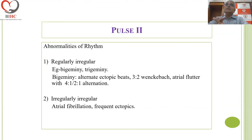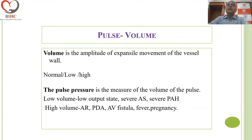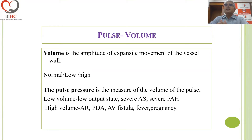The rhythm may be irregular because there is a premature ventricular or atrial contraction resulting in bigeminy or trigeminy, or a totally irregular pulse. Too frequent ectopics or atrial fibrillation is the cause for a totally irregular pulse. The volume of the pulse is the amplitude or expansive movement of the vessel wall — it can be normal, low, or high. The objective measure of pulse volume is the pulse pressure. A low volume pulse is a feature of a low output state as in severe aortic stenosis or severe pulmonary arterial hypertension. A high volume pulse occurs in aortic regurgitation, PDA, AV fistula, fever, pregnancy, and many other conditions.